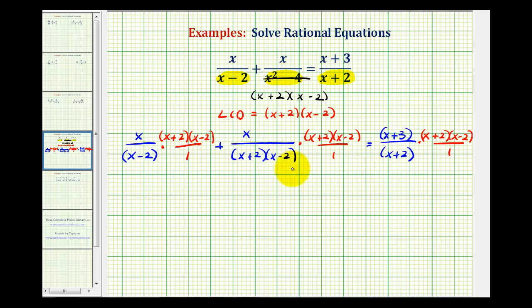And again the whole point of doing this is it will eliminate the denominators. Notice here we have a factor of x minus two over x minus two. Notice here we have a factor of x plus two over x plus two, as well as x minus two over x minus two. And then on the right we have a factor of x plus two over a factor of x plus two that simplifies to one. Now notice all the denominators are equal to one, so we've eliminated the fractions.